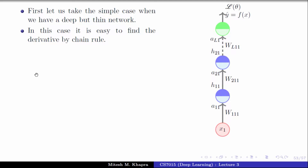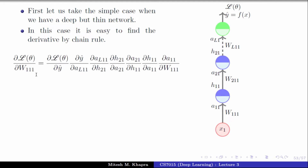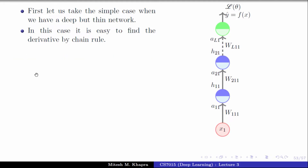So let's take a very simple case where we have a deep network but a very thin network. What do I mean by a thin network? I just have one neuron in every layer — not n or d1 neurons in every layer, just one single neuron. So it's a very thin network but it's a deep network. Now in this case, suppose you wanted to compute the derivative of the loss function with respect to the first weight which is w1,1,1. How would you do it?